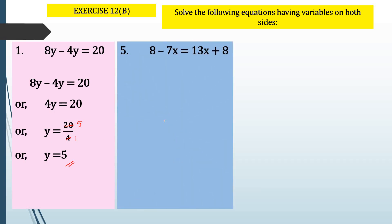Let's take another question, question number 5: 8 minus 7x equals 13x plus 8. Here we have variables 7x and 13x on opposite sides of the equality sign. So what we will try to do is write the variables on the left-hand side and the constant terms on the right-hand side. You can also write the variables on the right-hand side and constants on the left-hand side.